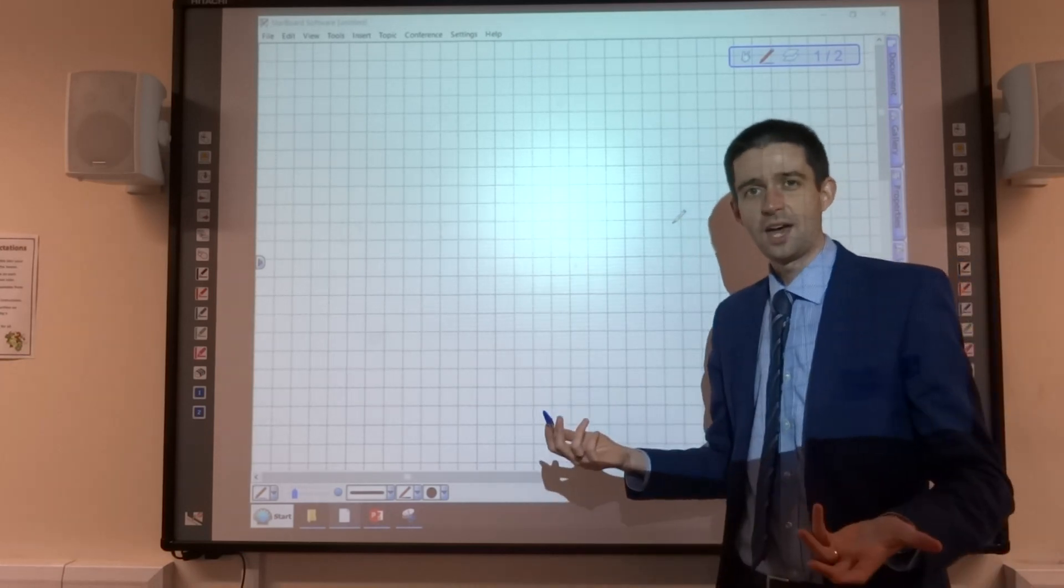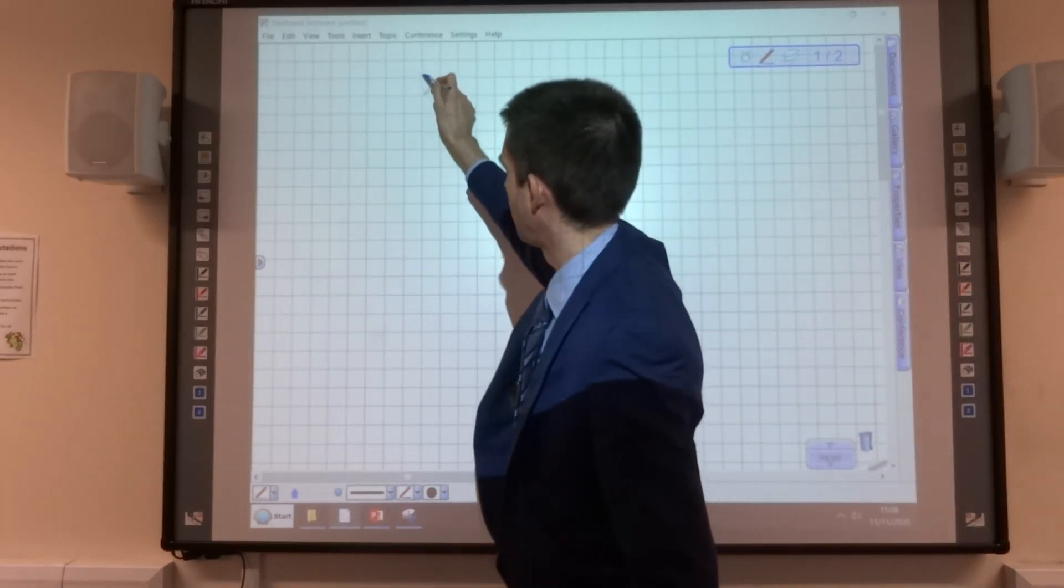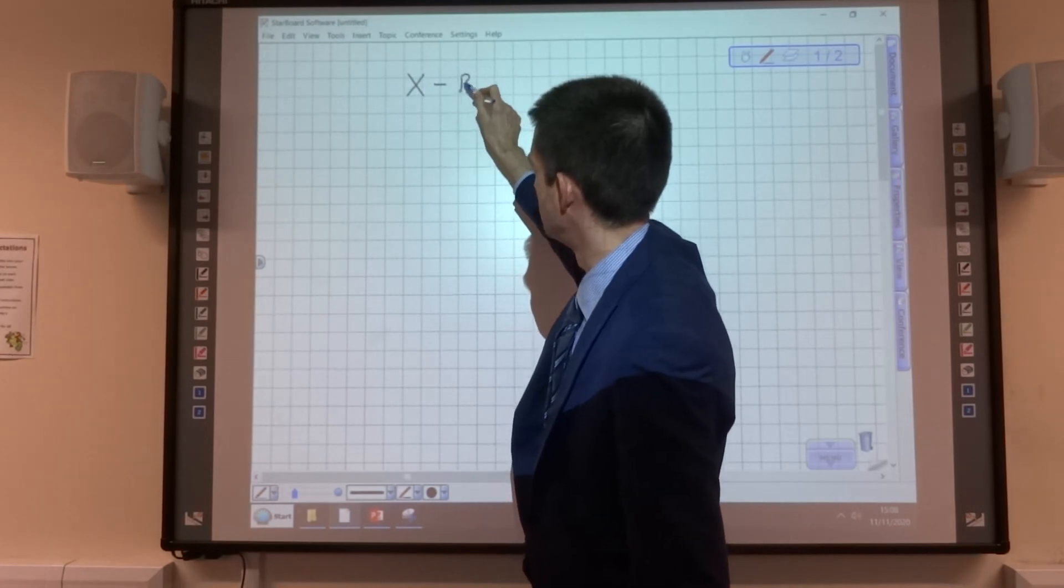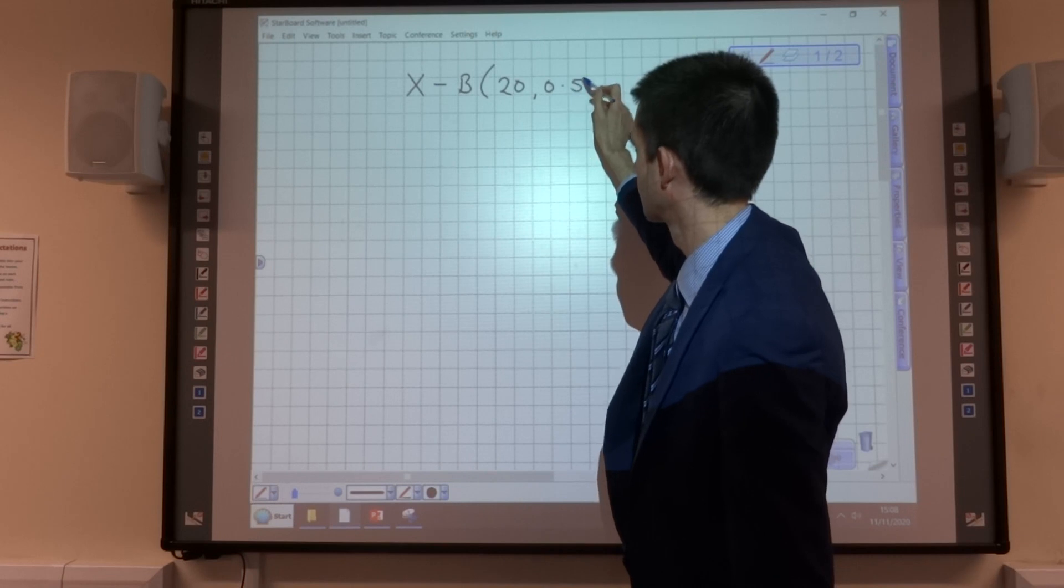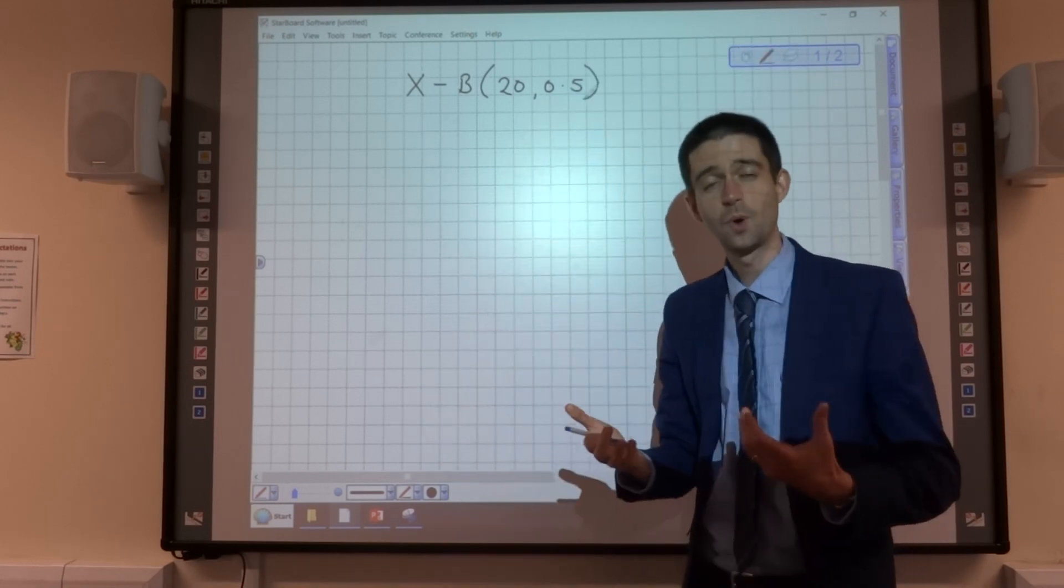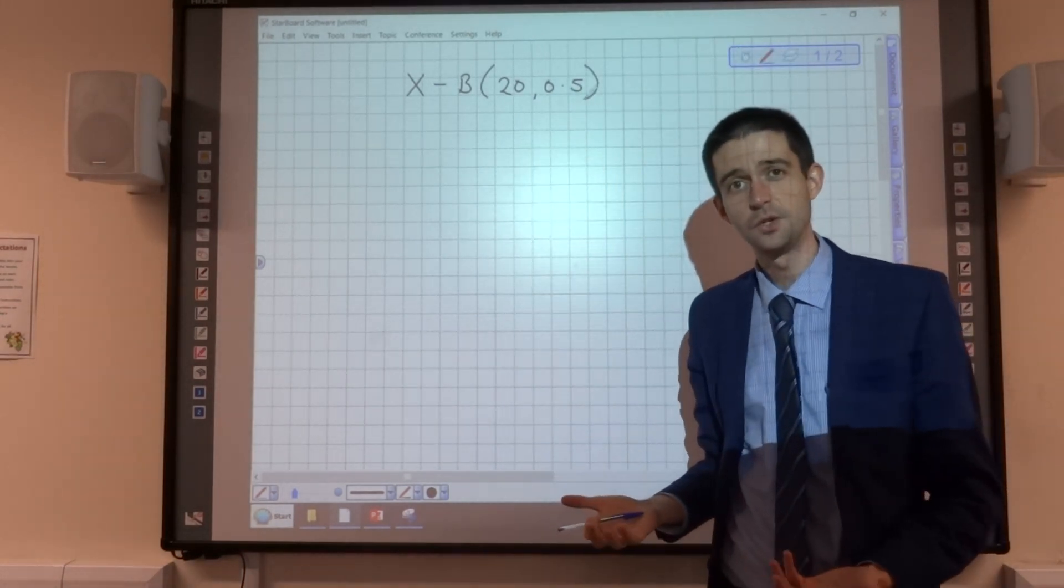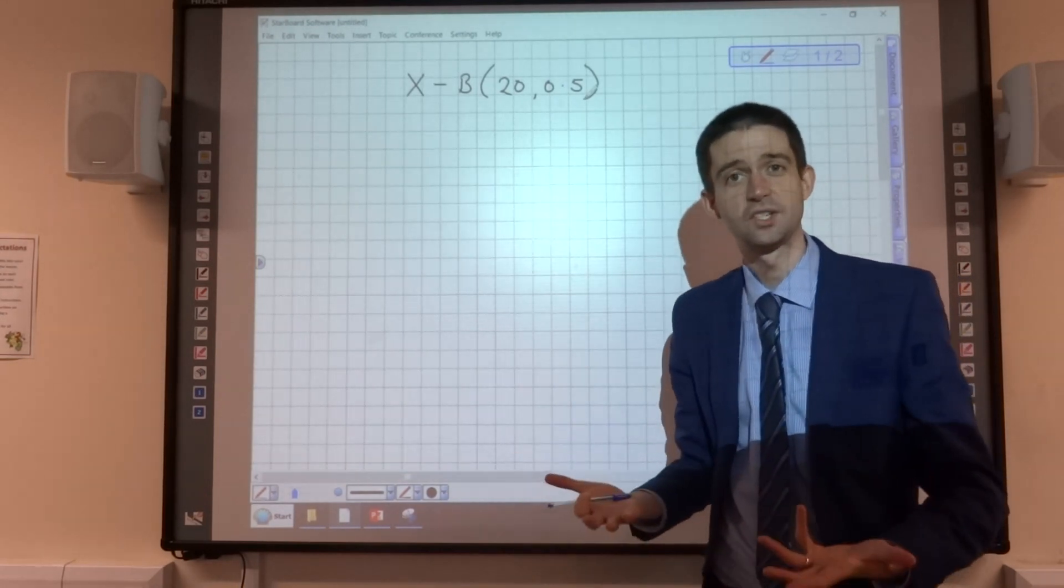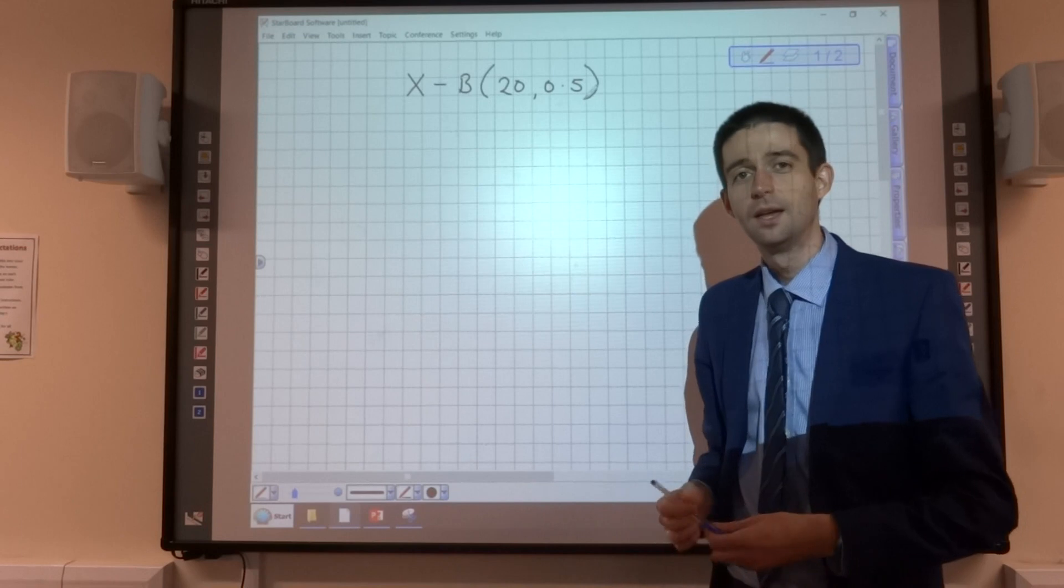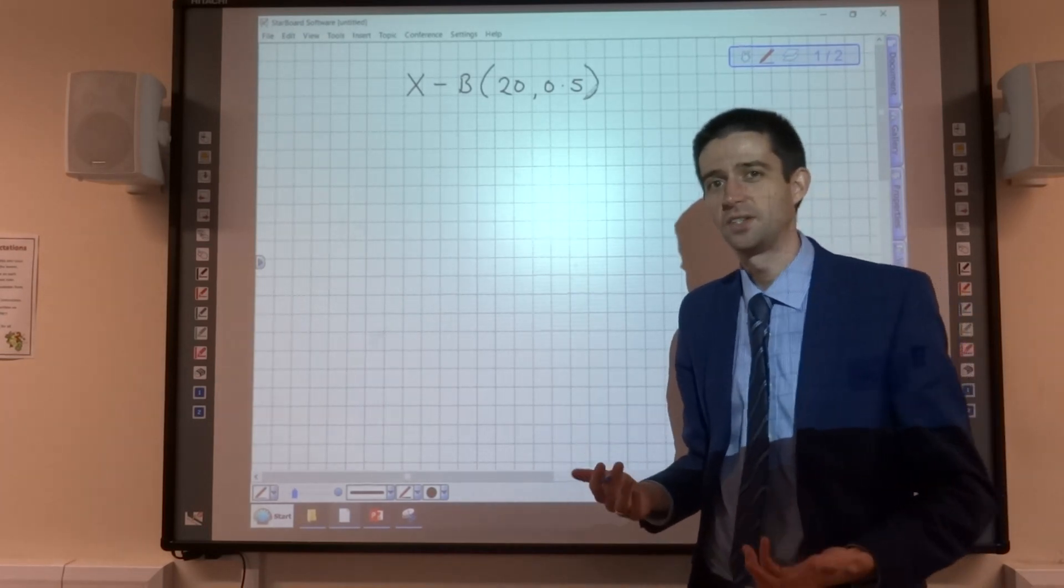So if we say that X is the number of heads, then we can say that X follows a binomial distribution B(20, 0.5), where 20 is the number of trials that we're going to do, and 0.5 is the probability of a success, which in this case is a head.